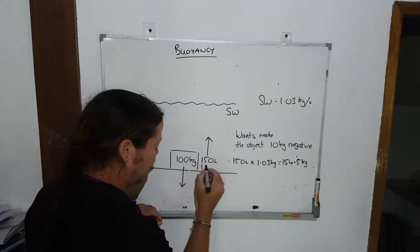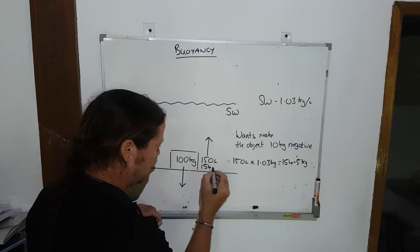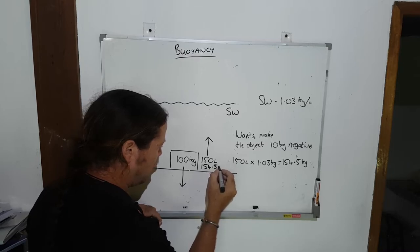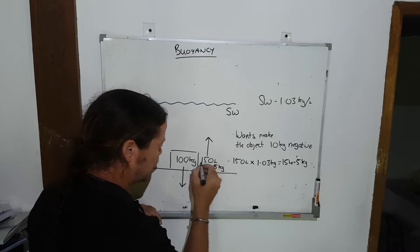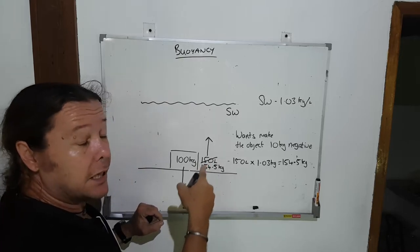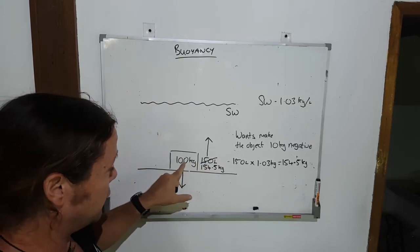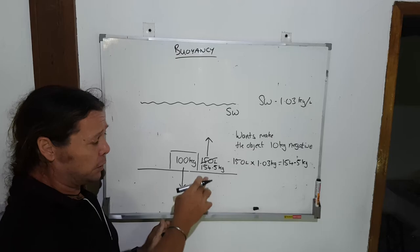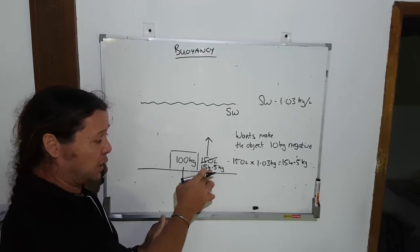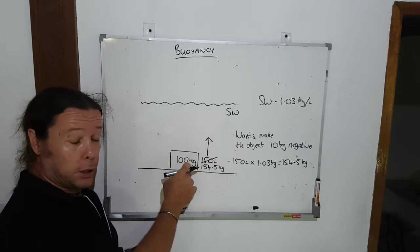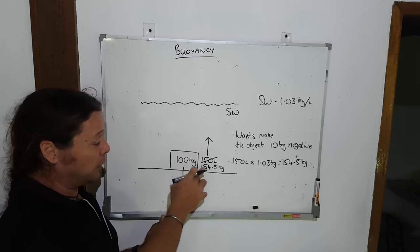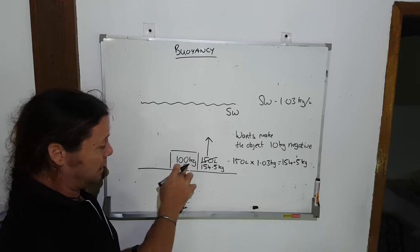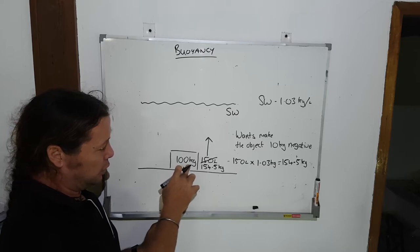I'm going to take away that number. Now I need to resolve yet again these two numbers. You can see quite plainly this one is winning, so this object is going to float away. How much would it float away by? The difference between the two.